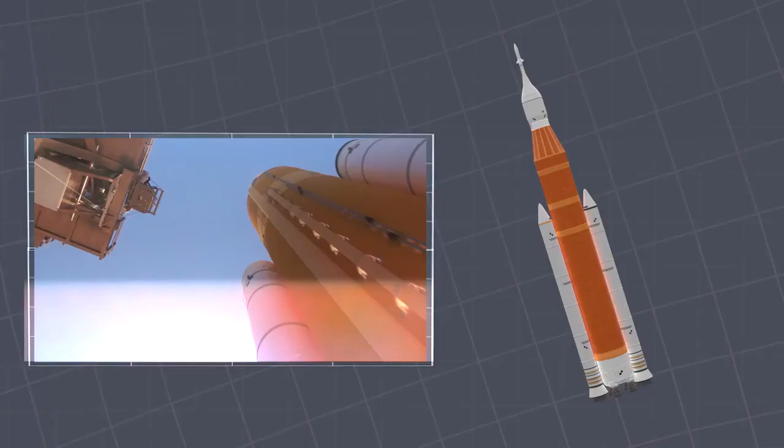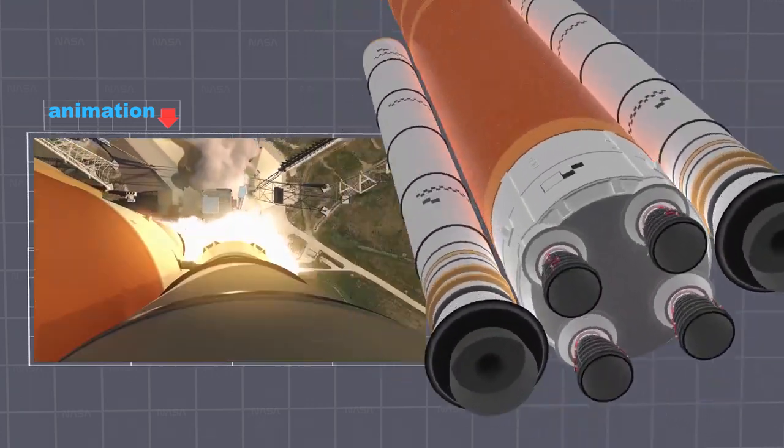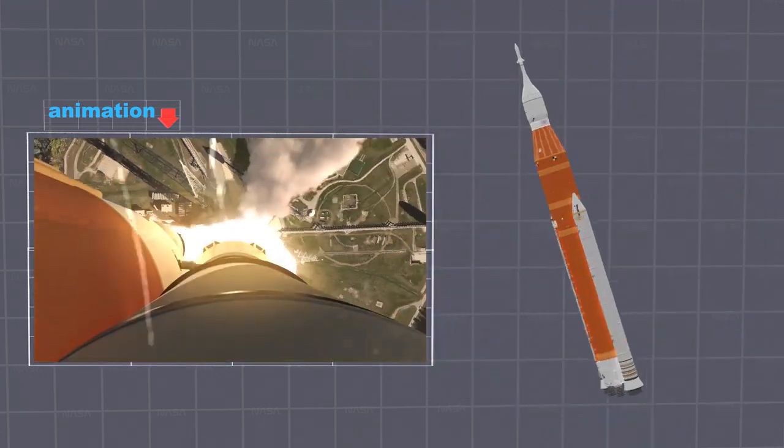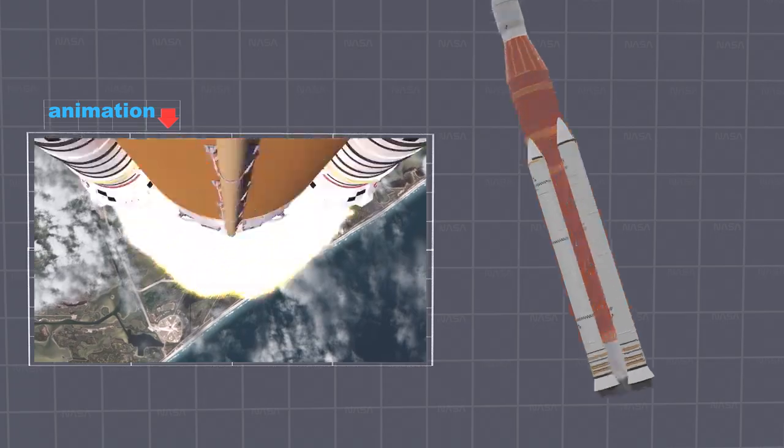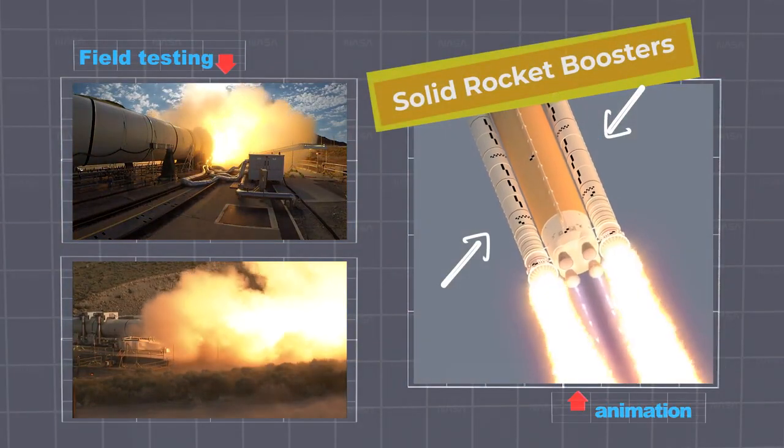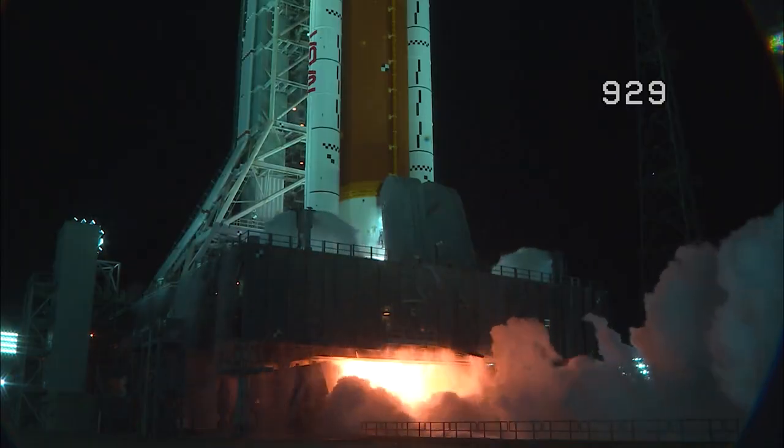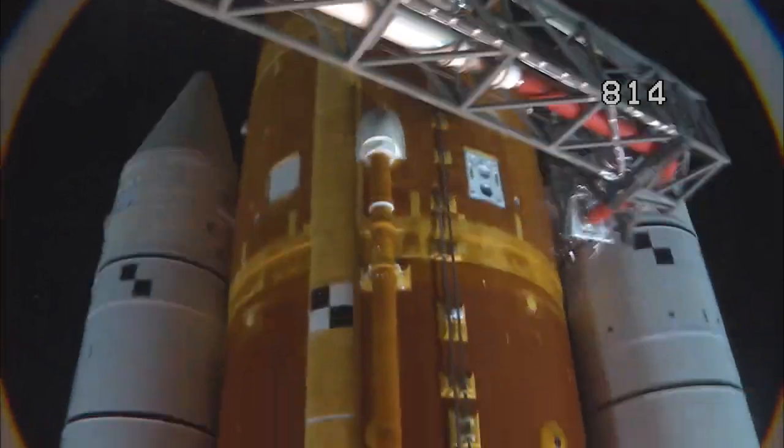It takes a powerful system of engines and boosters to get this massive rocket into the air and to propel the Orion capsule all the way to the moon. Two solid rocket boosters burn about 6 tons of solid propellant each second to help lift the rocket off the launch pad.